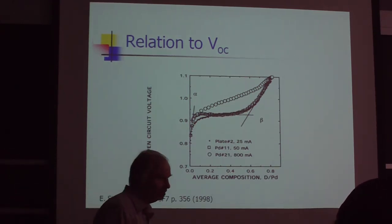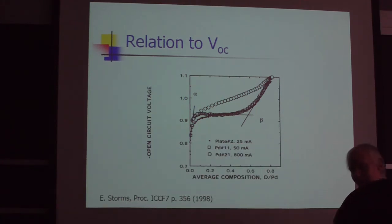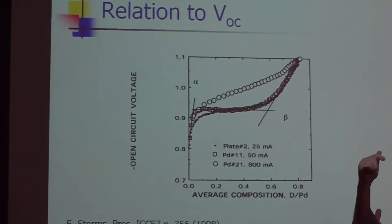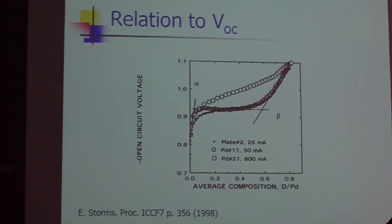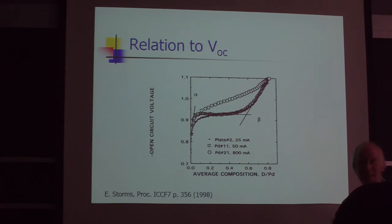Fleischmann had argued that in his experiments, the loading needed to be high, and he could tell the loading was high by measuring the voltage difference between a reference palladium cathode and the working cathode. He was arguing that he needed a voltage difference of 27-28 millivolts, which would correspond to a chemical potential implying very high pressure—around 100,000 atmosphere equivalent pressure to match what he was measuring from the electrochemical cell.